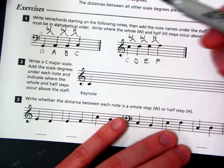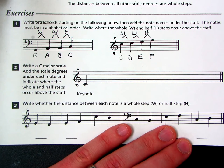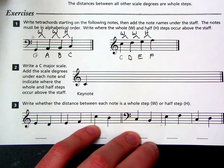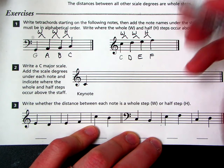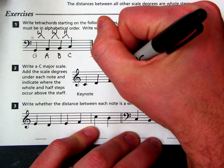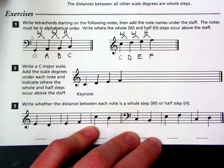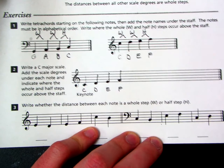Question two says, write a C major scale. Add the scale degrees under each note and indicate where the whole and half steps occur above the staff. So our key note has to be C because we're drawing a C scale. Now we need to build our first tetrachord. A whole step away from C would be D. A whole step from that is E. And then a half step from E is F. So there's our first tetrachord. C, D, E, F.